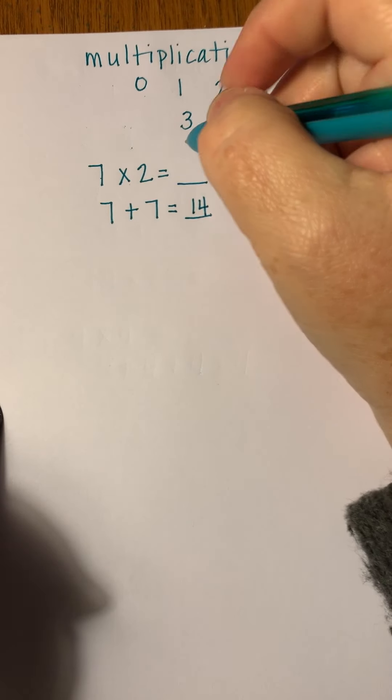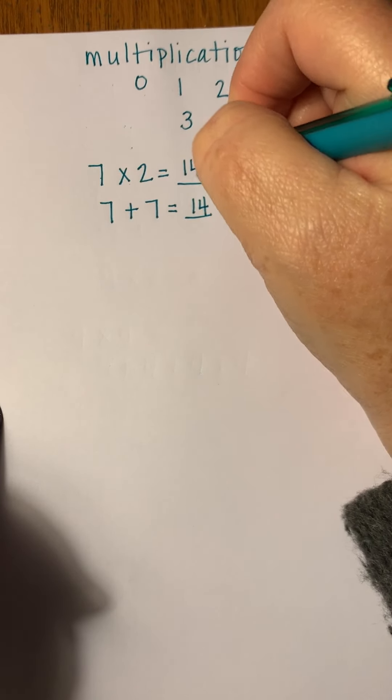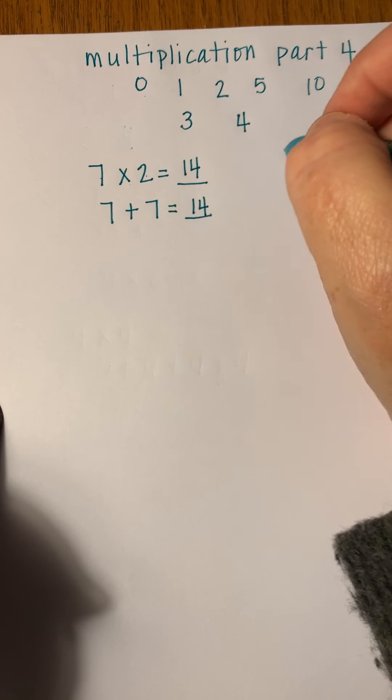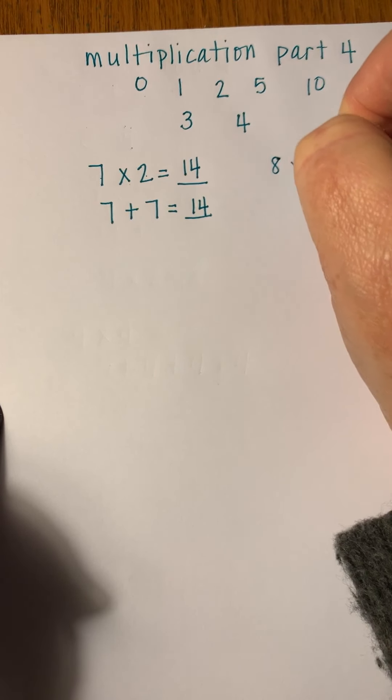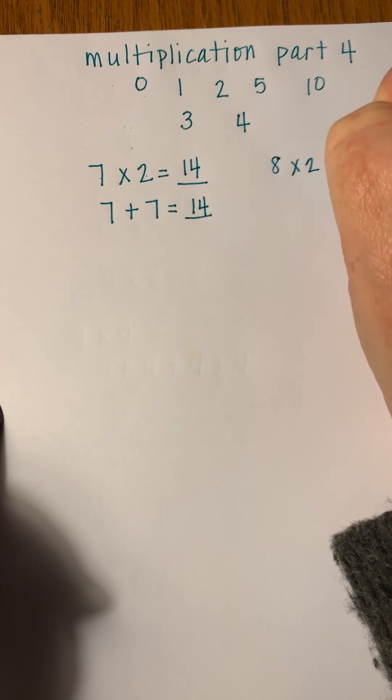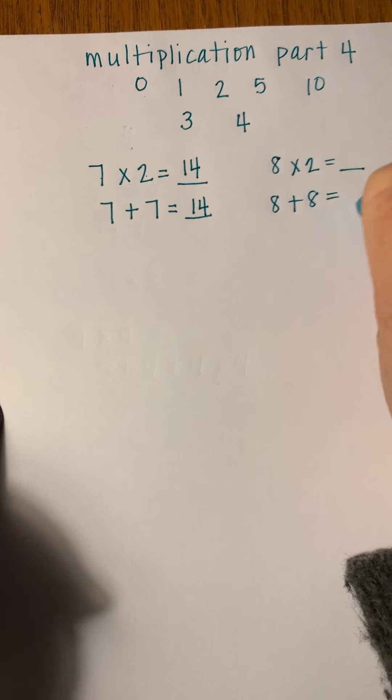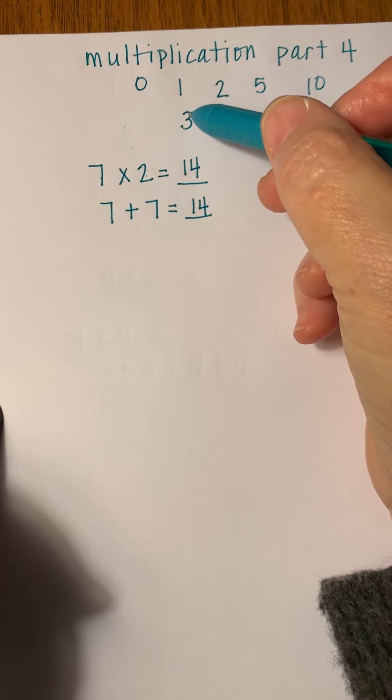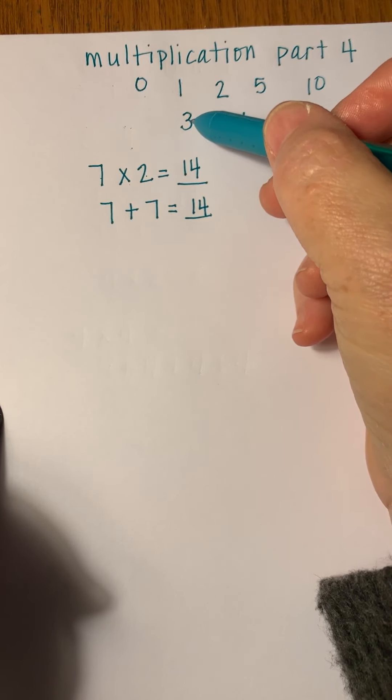7 times 2 is 14, and this works for any number sentence of times 2. So over here I could do 8 times 2, that's going to have the same answer as 8 plus 8. Do you know the answer? 16. All right, let's talk about times 3.